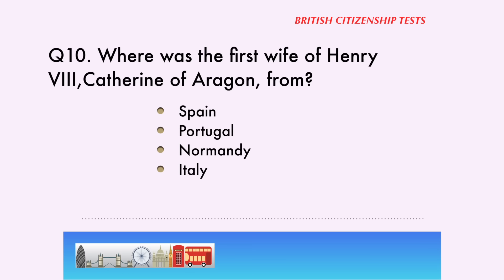Question 10. Where was the first wife of Henry VIII, Catherine of Aragon, from? Spain, Portugal, Normandy, Italy. The correct answer is... Spain.